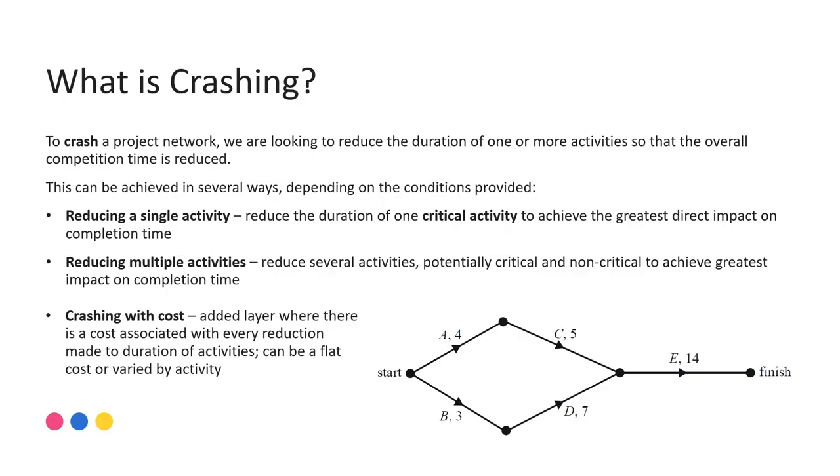In this session we'll look at reducing multiple activities. Potentially a critical activity definitely needs to be reduced but sometimes you need to couple that with a non-critical activity to enable you to achieve the greatest outcome overall. And then finally we'll look at this idea of crashing with cost. This is usually an additional layer to a question where you then have a budget and most of the time that is a monetary cost. Or it may be that you have to achieve a particular outcome in time.